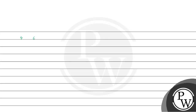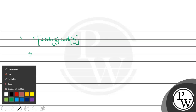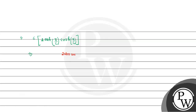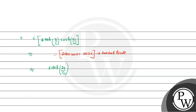Taking c common, we have c·[2·sinh(x/c)·cosh(x/c)]. Using the standard result 2·sinh(θ)·cosh(θ) = sinh(2θ), this gives us c·sinh(2x/c). So this is our final solution.